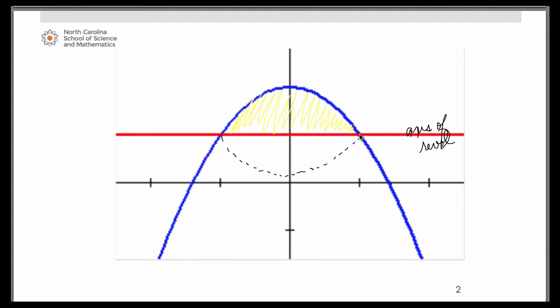According to the disk method, the representative rectangle that we draw is going to have two characteristics. It's going to be perpendicular to your axis of revolution and also touching it.